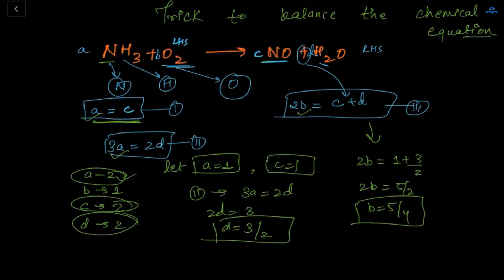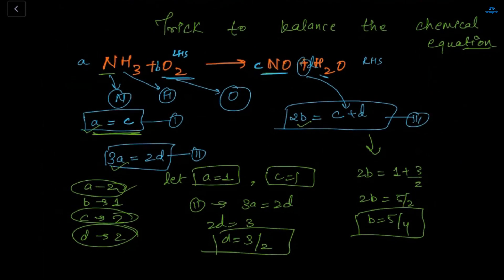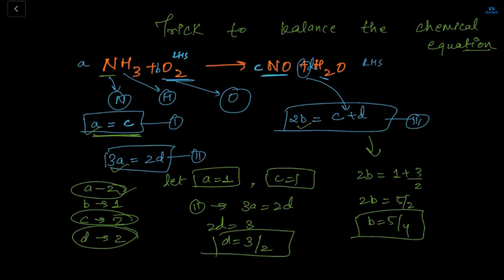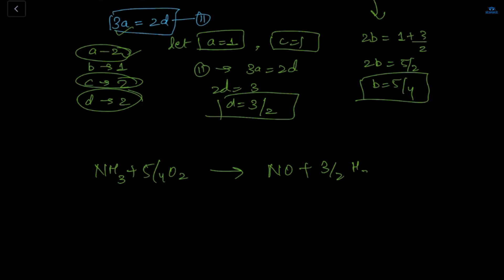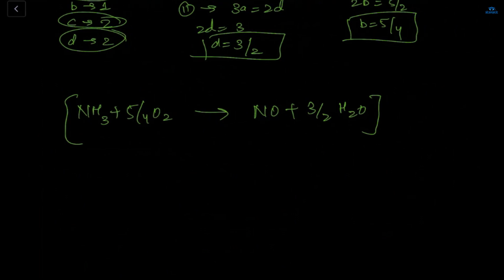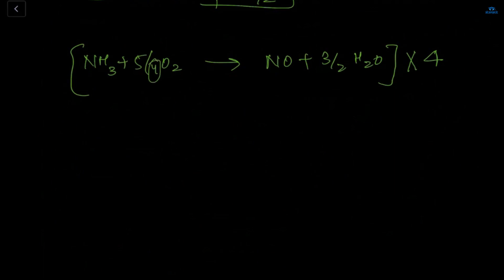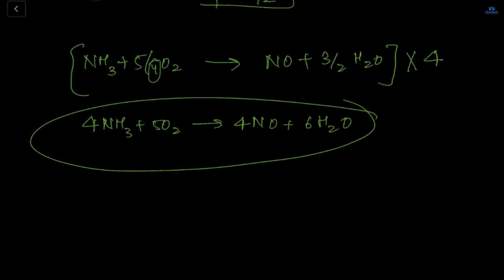So the equation becomes: 1 NH3 + 5/4 O2 → 1 NO + 3/2 H2O. Since we have fractions, we multiply the whole equation by 4 to clear the denominator. This gives: 4 NH3 + 5 O2 → 4 NO + 6 H2O. Now check: N is 4 on both sides, H is 12 on both sides, O is 10 on the left and 4+6=10 on the right. The equation is balanced!